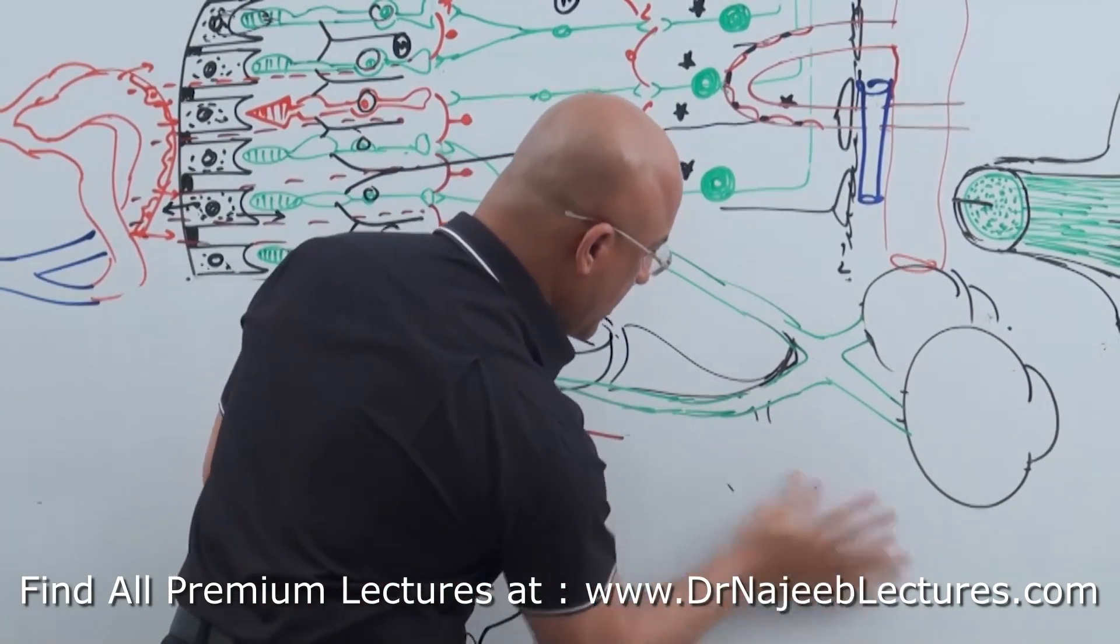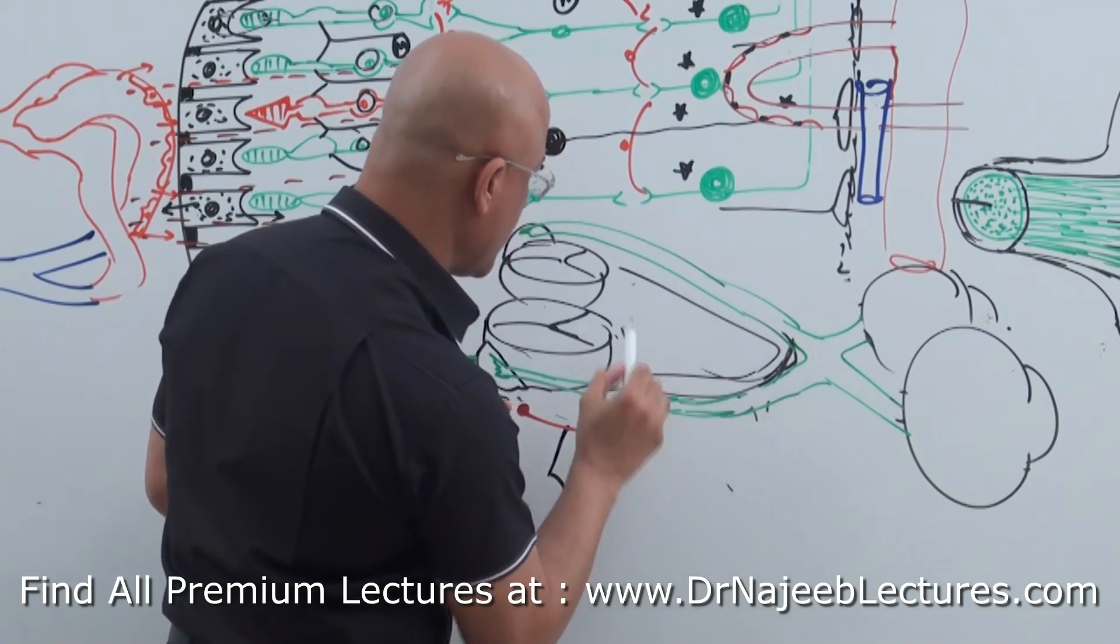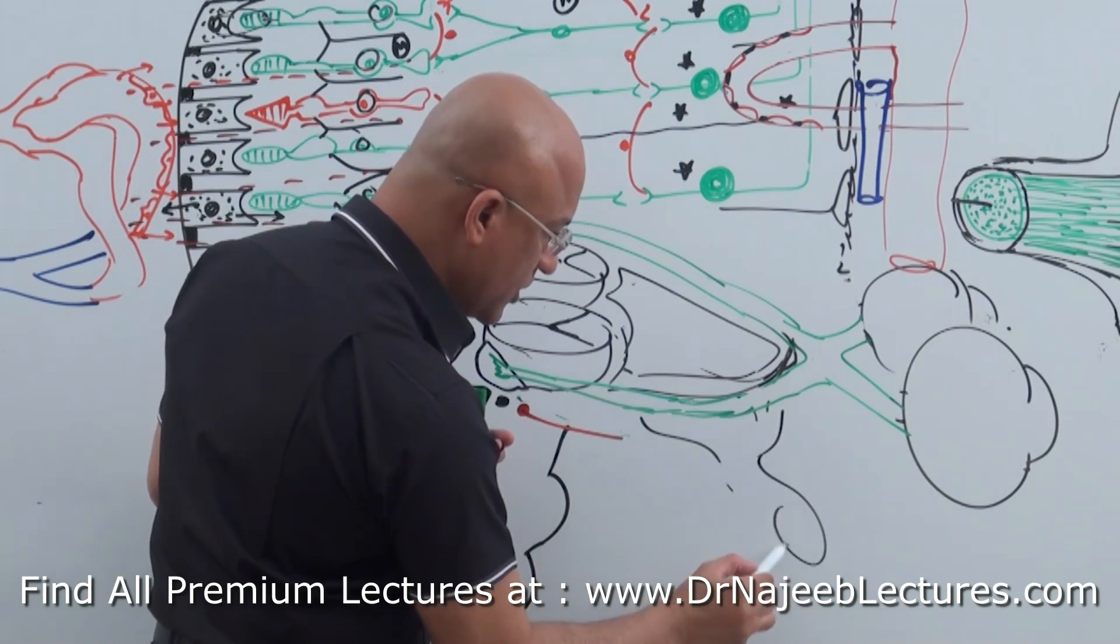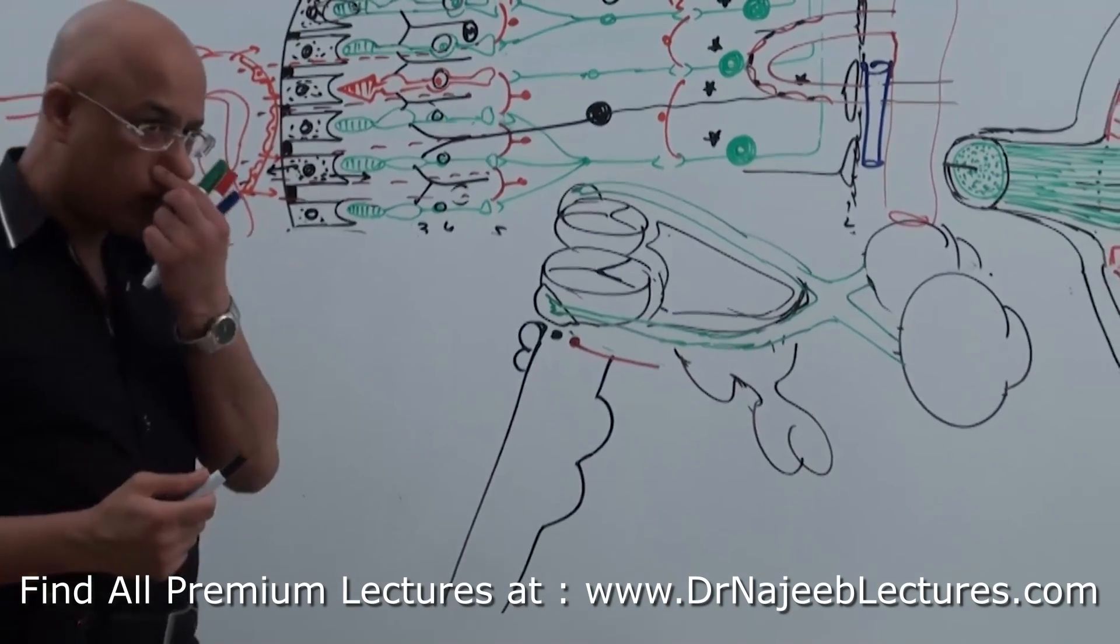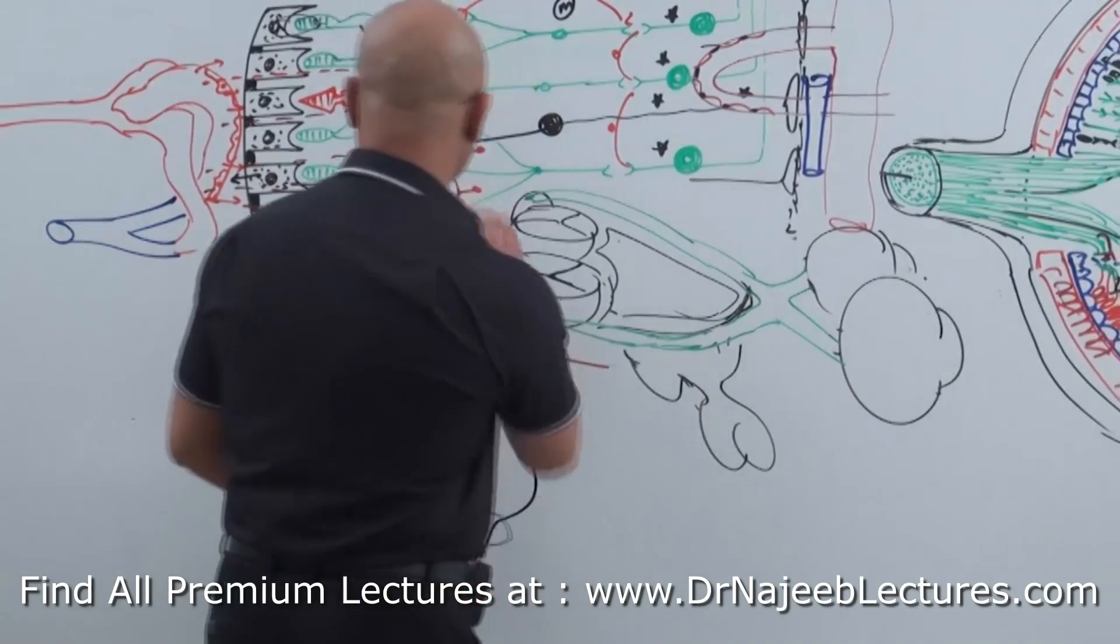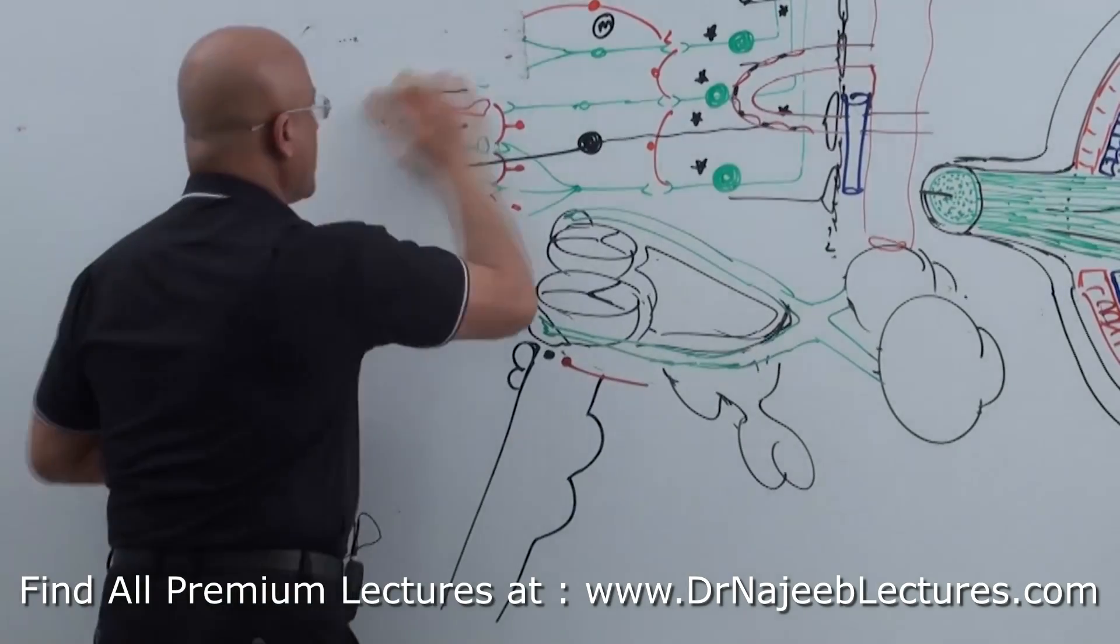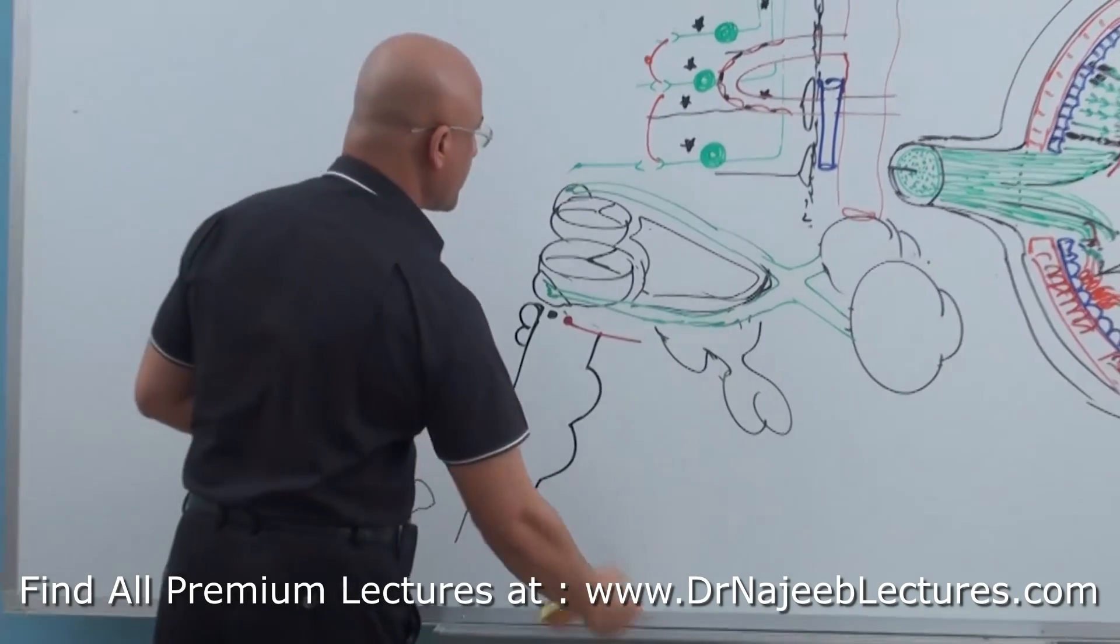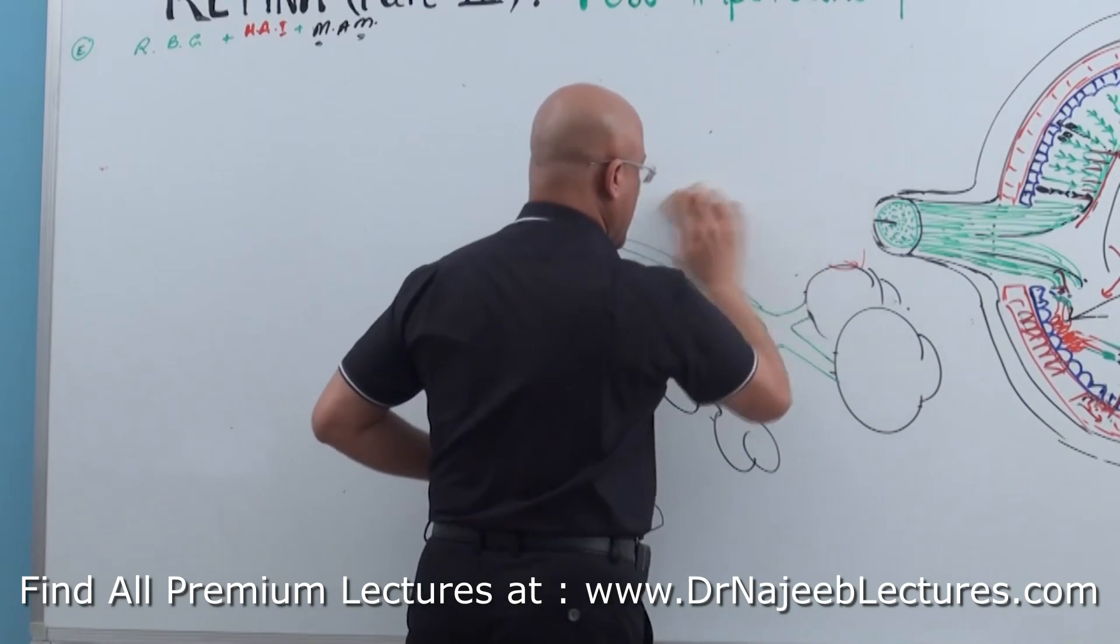Now, what is this structure? This is hypothalamus, anterior pituitary, posterior pituitary, and mammillary body. Am I clear on this structure? Any questions? Anyone who is confused about this diagram? It's clear? I will remove this so it becomes clear to you.